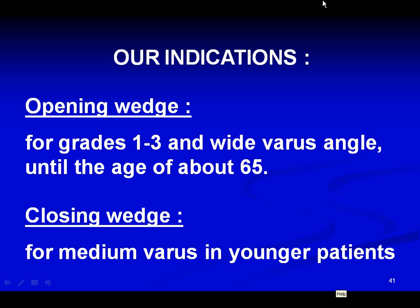In conclusion, careful patient selection and skillful surgical technique yield an efficient intervention when 5 degrees mechanical valgus is achieved. There is axis restitution plus clinical improvement for 10 to 12 years, with more severe arthritis seen after 15 years. An early HTO gives good results, avoiding or delaying replacement, and HTO is the best choice for prevention and treatment of early osteoarthritis — for cases of beginning or medium severity — and may also be justified for economical reasons in our international society.